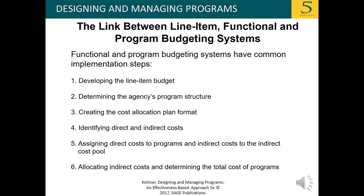Functional and program budgeting systems have common implementation steps: 1. Developing the line item budget. 2. Determining the agency's program structure. 3. Creating the cost allocation plan format. 4. Identifying direct and indirect costs. 5. Assigning direct costs to programs and indirect costs to the indirect cost pool. 6. Allocating indirect costs and determining the total cost of programs.